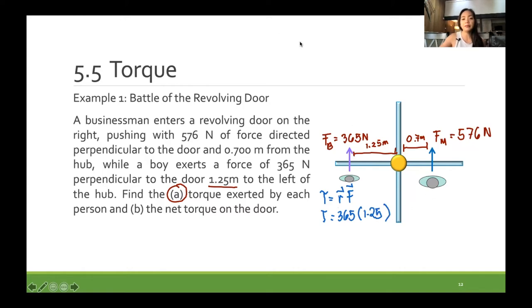And for the man, the torque is equal to the force times the distance R, or the position R. So we have 576 for the force times 0.7 meters for the R.